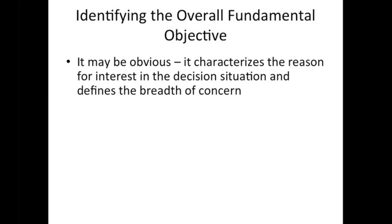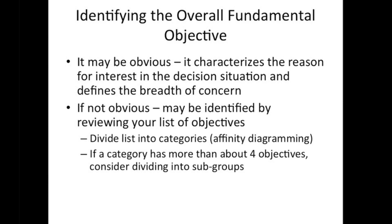The overall fundamental objective is the main reason you're interested in this decision situation, and it may be fairly obvious. But if it's not, you may be able to identify it from among your list of objectives by using some simple techniques. Take your list and divide it into categories — this is sometimes called affinity diagramming. Put each objective on a 3x5 card or a post-it note and arrange them on a table or whiteboard. Then, individually or as a group, gradually move these objectives into logical groupings based on the degree to which they are similar. If you find a category with more than about four objectives, a good rule of thumb is to consider subdividing it into subgroups. Going through this exercise should help you get a clearer picture of your overall fundamental objective.